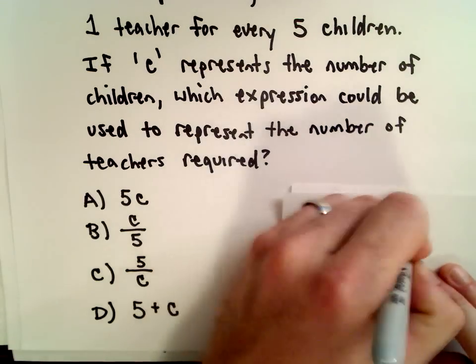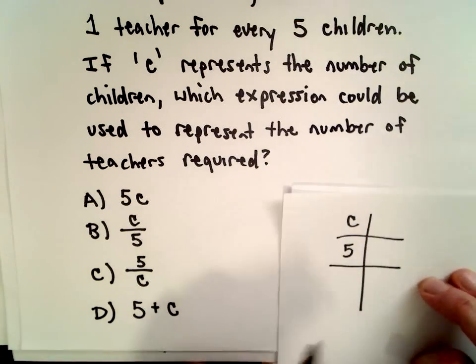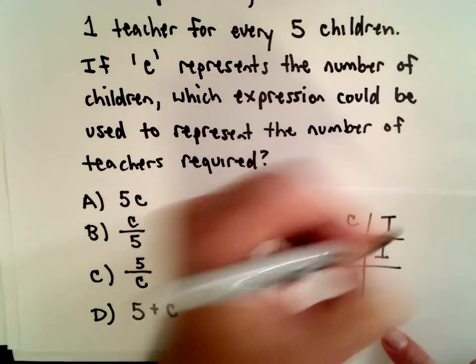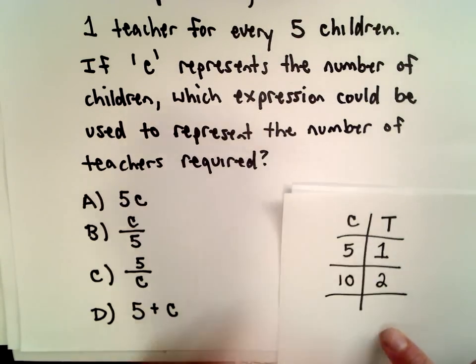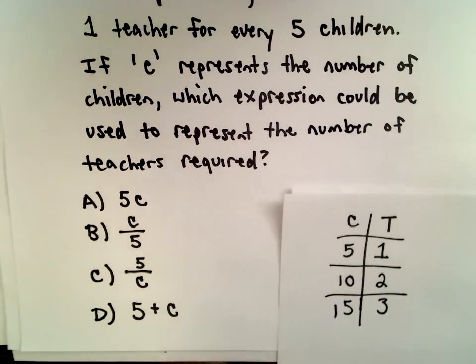Let's suppose we have five children. We'll need one teacher. I'll use a capital T for the number of teachers. If we have ten children, we need two teachers. If we have fifteen children, we need three teachers.